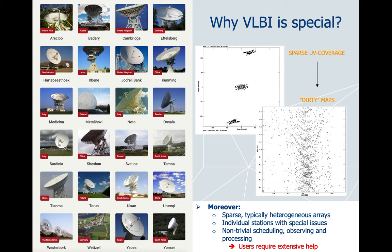VLBI is also more complicated than other arrays because we usually have a smaller number of telescopes and our UV plane is not completely filled. Sometimes you have many telescopes on shorter spacings and only a few on very long spacings. With this kind of UV sampling, when you produce your initial dirty map, you will see very strong sidelobes — your dirty map will be really dirty — and this complicates imaging, especially if some telescopes have calibration issues.